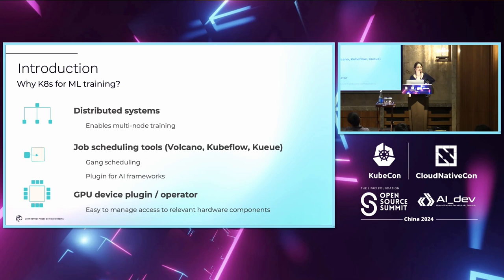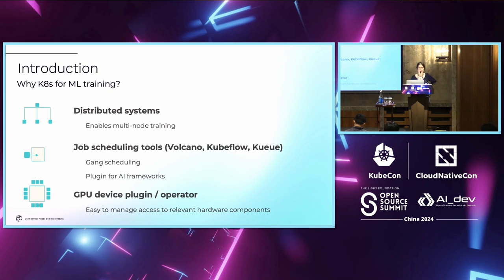Why Kubernetes for ML training? Three key points: Kubernetes is designed for distributed systems, which is really helpful for multi-node training workloads. It has a good ecosystem of job scheduling tools like Volcano, Kubeflow, and Kueue, which support gang scheduling so pods get scheduled at the same time. They also have plugins for AI frameworks and the GPU device plugin operator, which makes it easy to manage the software layer for accessing hardware components required for AI training.